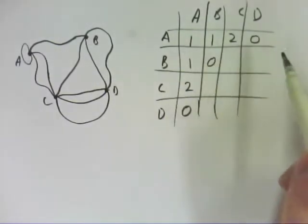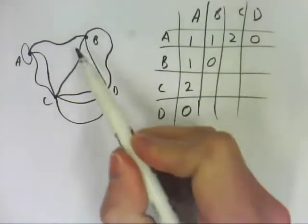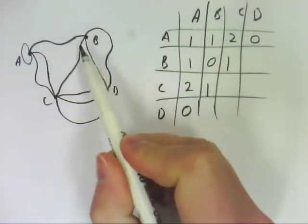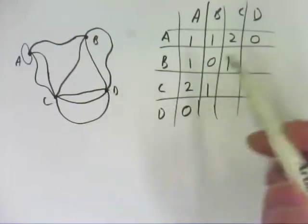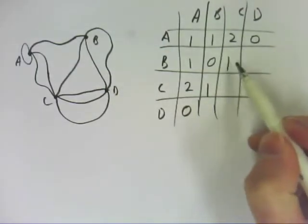Now we keep going. From B to B, there are none. From B to C, there is just the one. From B to D, there is two.